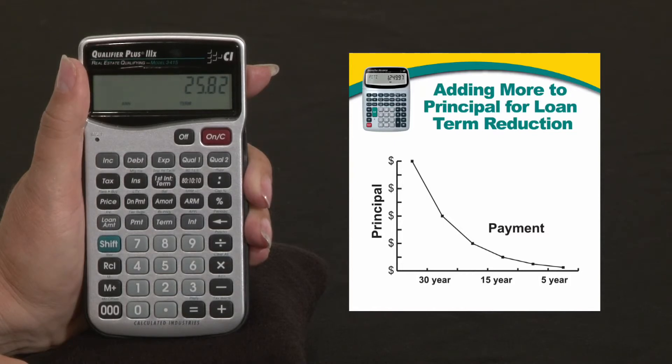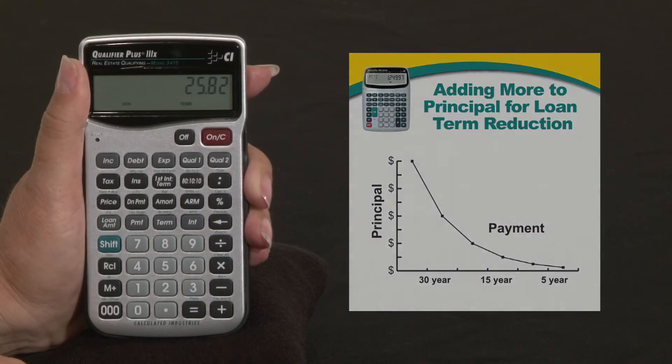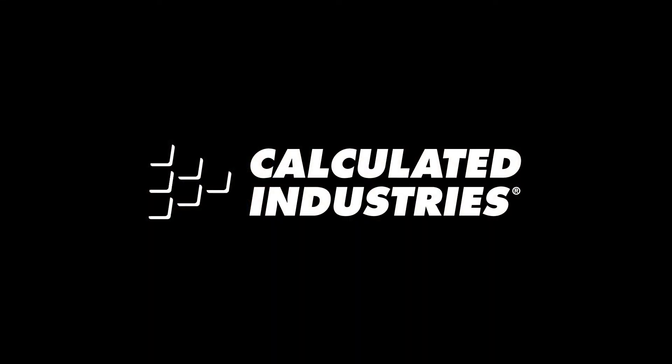That's a quick overview of the term reduction feature. For more information, you can go to www.calculated.com/support.